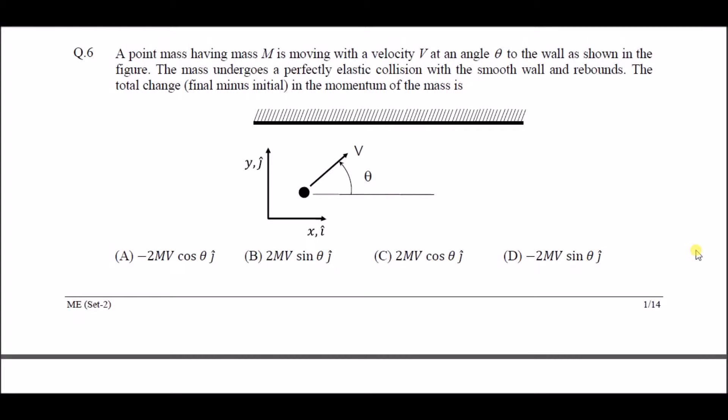A point mass having mass m is moving with a velocity v at an angle theta to the wall as shown in the figure. The mass undergoes a perfectly elastic collision with the smooth wall and rebounds. The total change, that is final minus initial, in the momentum of mass is: